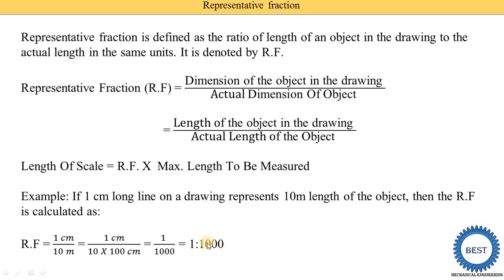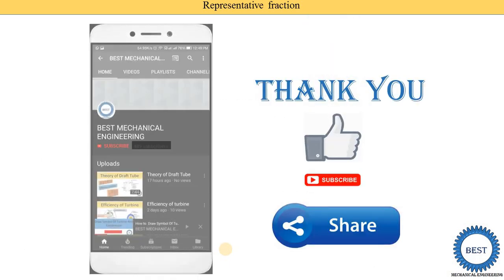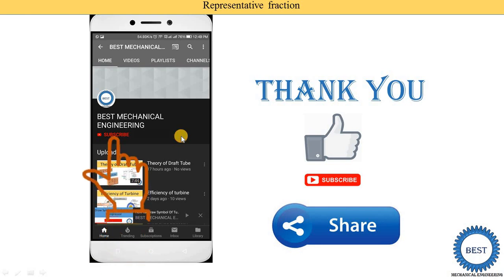So RF is also written as 1:1000. By using these equations, we are able to find out the representative fraction or the length of scale. Thank you for watching this video. If you learned something, please like the video and subscribe to my channel for more videos related to engineering graphics or engineering drawing. And don't forget to share with your friends.